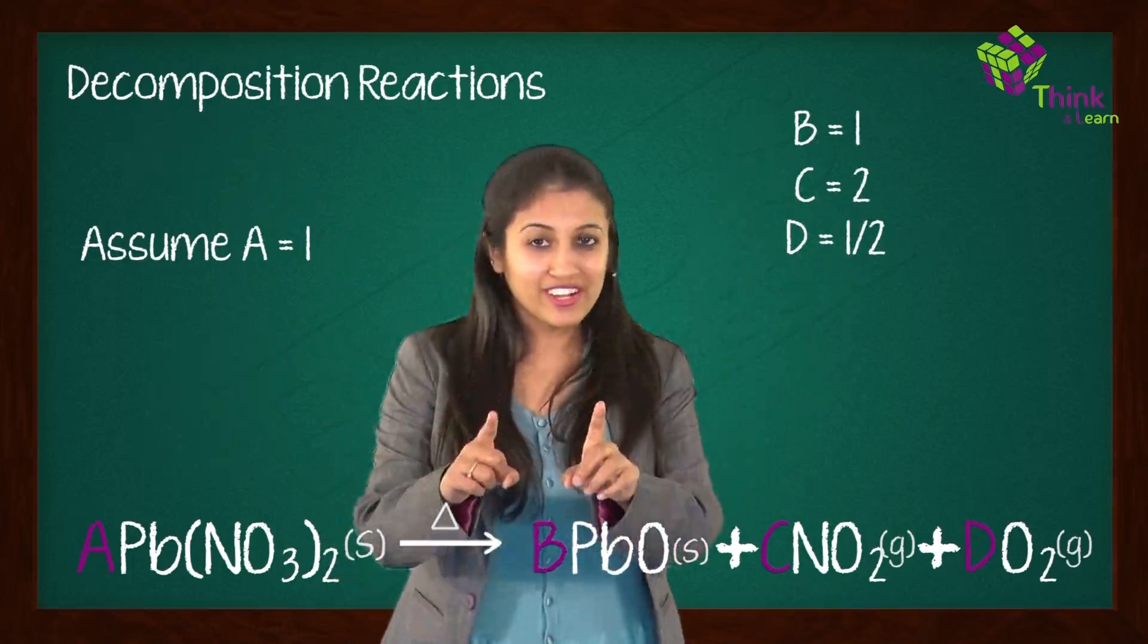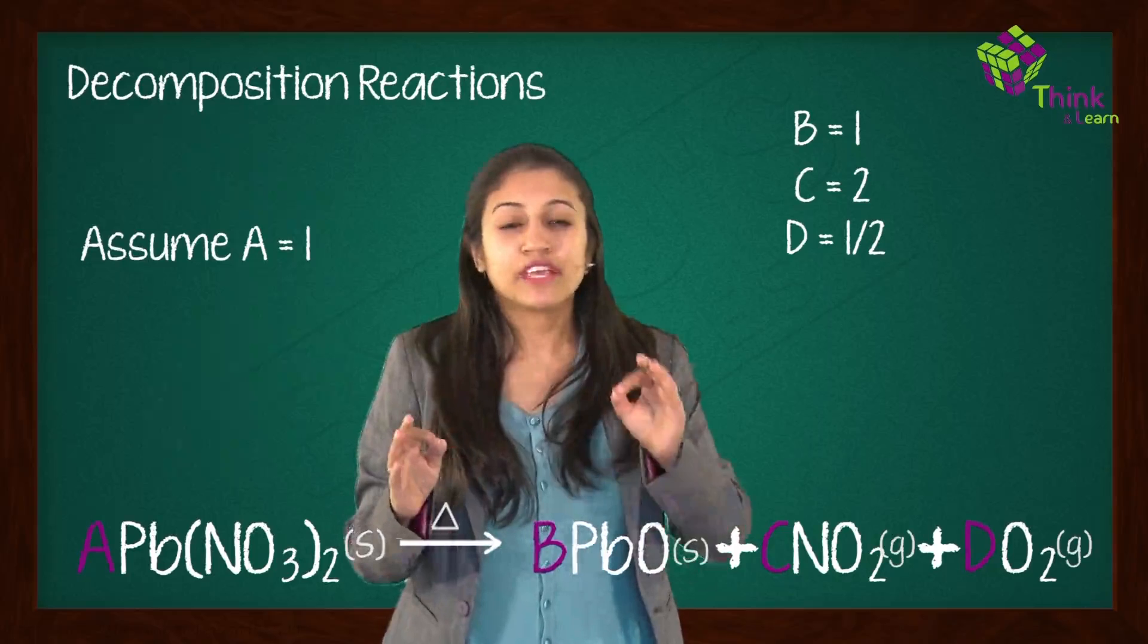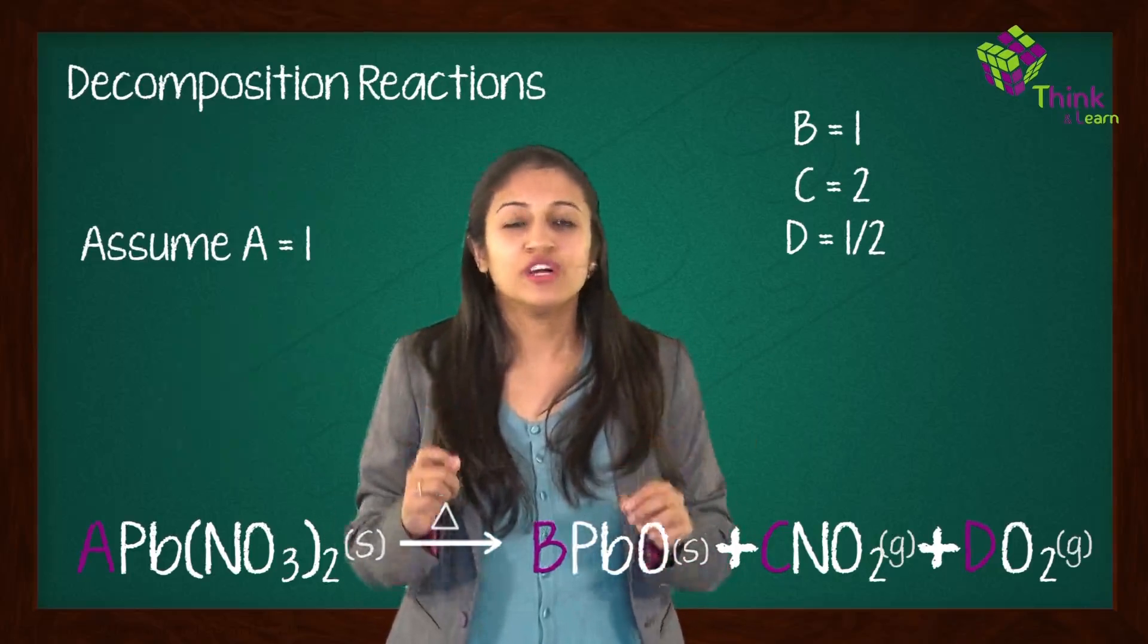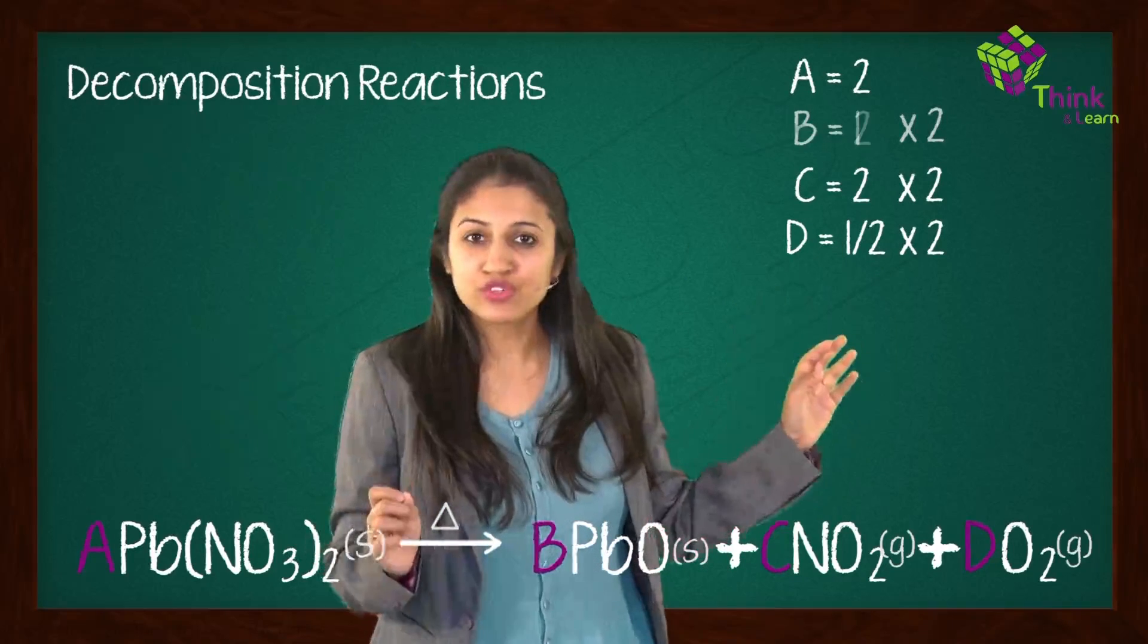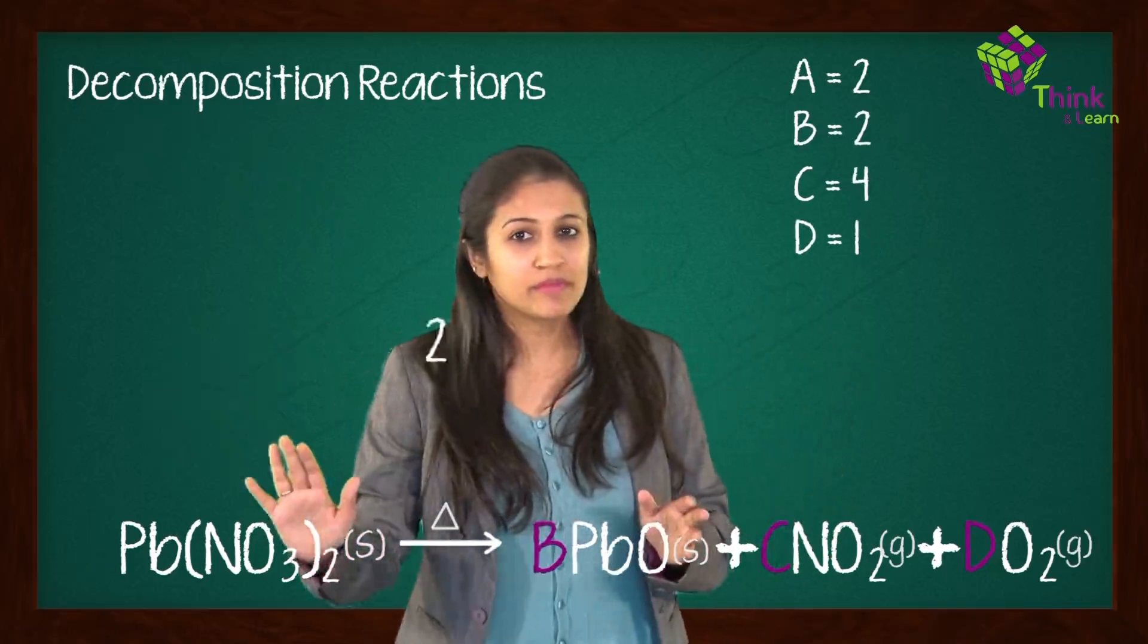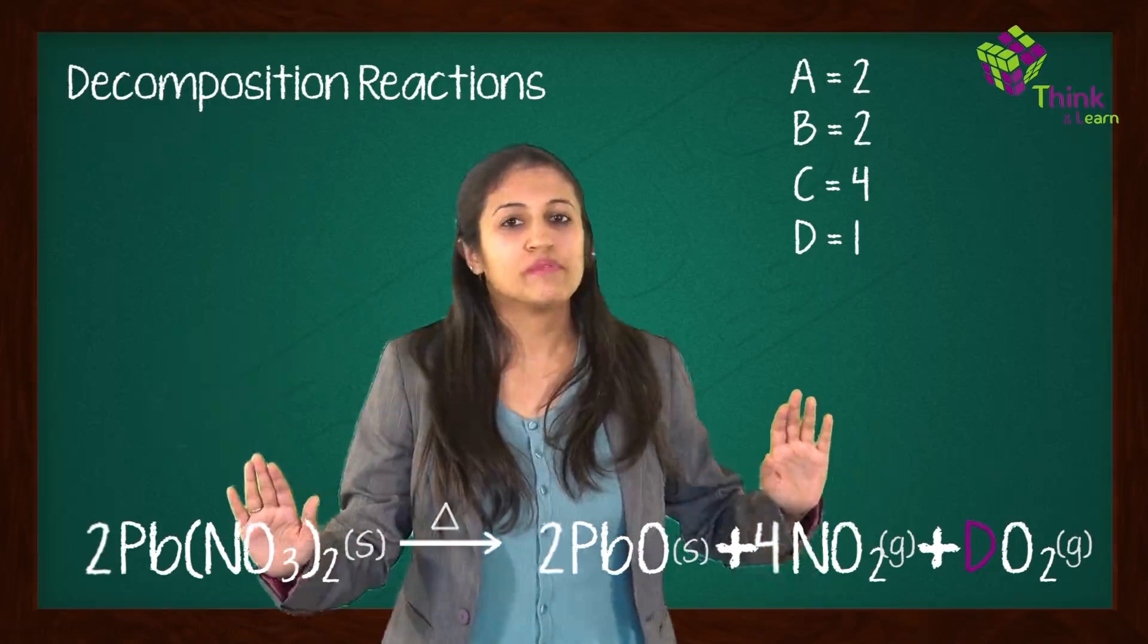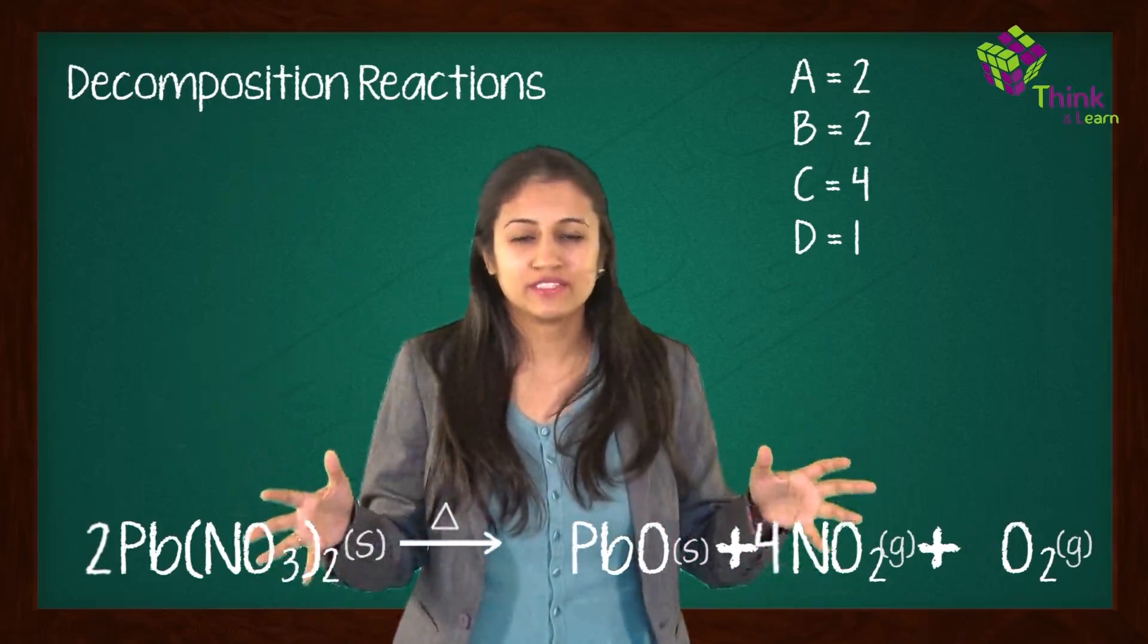Don't worry, you're not stuck. When you get a fractional value, what you simply need to do is multiply it so that fractional value becomes a whole number. So multiply everything by 2. So you get A is equal to 2, B is equal to 2, C is equal to 4, and D is equal to 1. So what is the balanced equation? It is 2Pb(NO3)2 giving you 2PbO plus 4NO2 plus O2. Add the physical states and your equation is balanced.